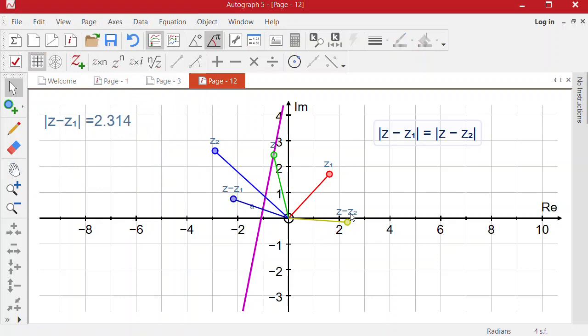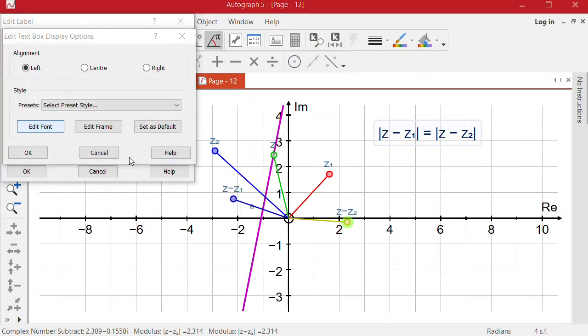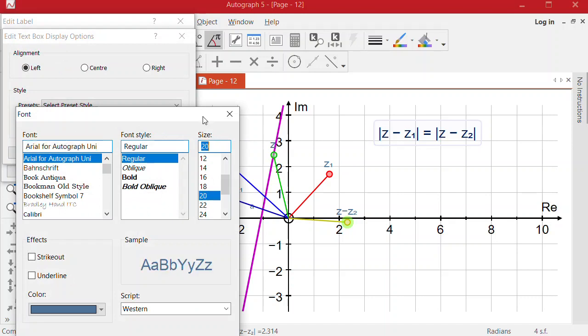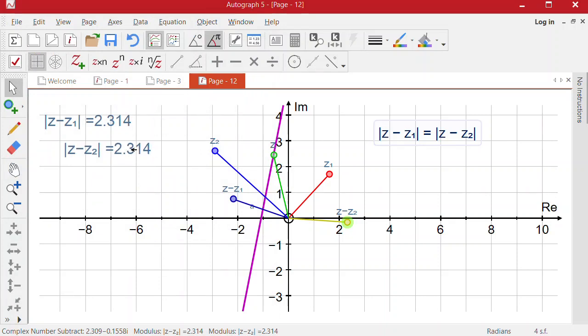And then the same with z minus z2. If I select that, go to the modulus icon and move this over here. Then I'll deselect anchor to object, edit the font, change it to 20 and OK. So we can see that the modulus for the two of them are the same.